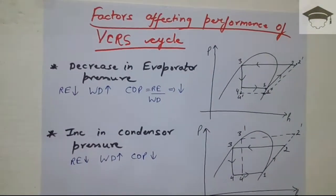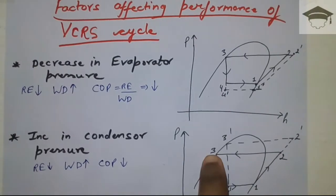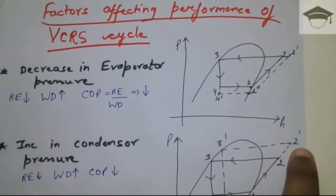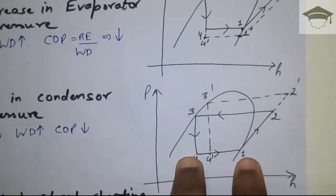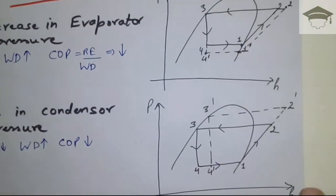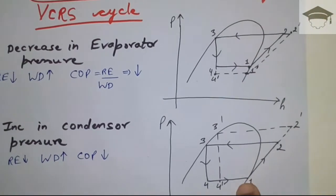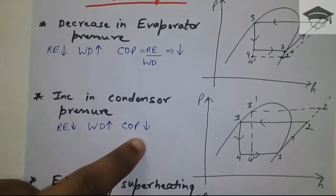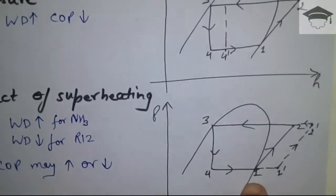Moving on to the second parameter: condenser pressure. The condenser pressure line is the solid line. If we increase the condenser pressure, shown by the dotted line from 2 dash to 3 dash, the refrigeration effect is reduced from h1 minus h4 to h1 minus h4 dash. The work input also increases from h2 minus h1 to h2 dash minus h1. As with the previous case, refrigeration effect is reduced and work done is increased, so COP is reduced.